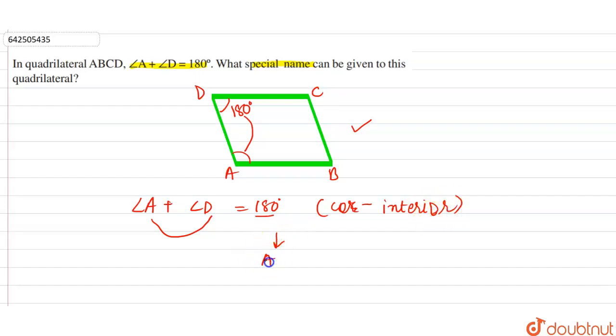We can say that quadrilateral ABCD is a trapezium because the sum of the co-interior angles is equal to 180 degrees.